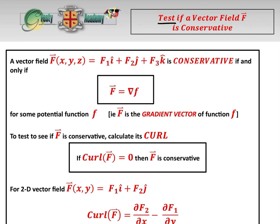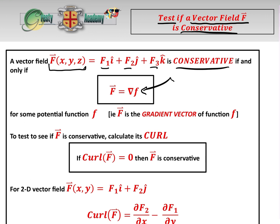Today we're going to be looking at a test to see if a vector field f is conservative. We have a vector field f(x, y, z) which is f1 in the i direction, f2 in the j direction, f3 in the k direction. It is conservative if and only if the vector is equal to the gradient of some function f, i.e. f is the gradient vector of that function f.